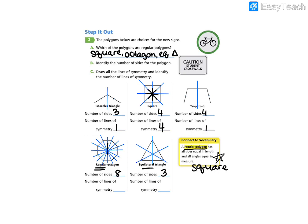So the same for the octagon. We have one, two, three, four, five, six, seven, eight lines of symmetry. And our equilateral triangle, we have one, two, three.